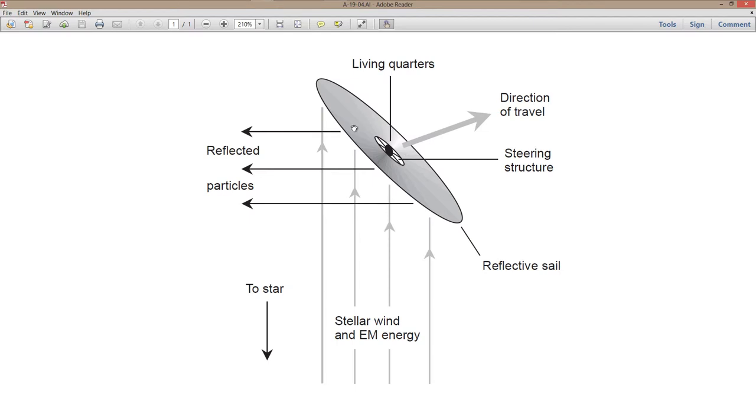the way that this works is that the pressure of the particles from the sun or whatever star you happen to be in the vicinity of will strike this gigantic reflective piece of material, very lightweight, deployed in a gigantic sail.